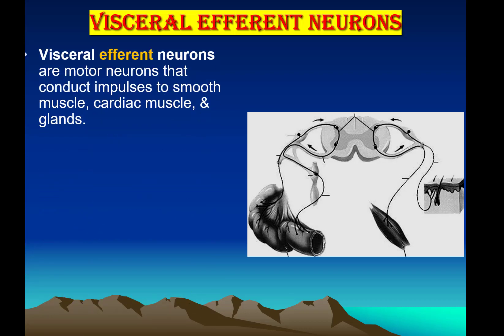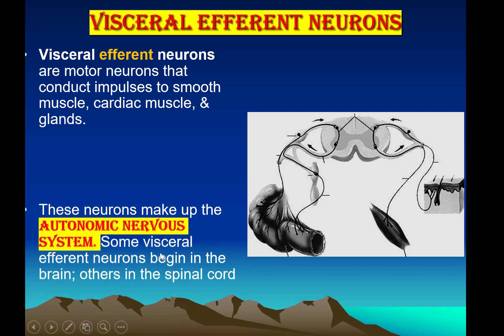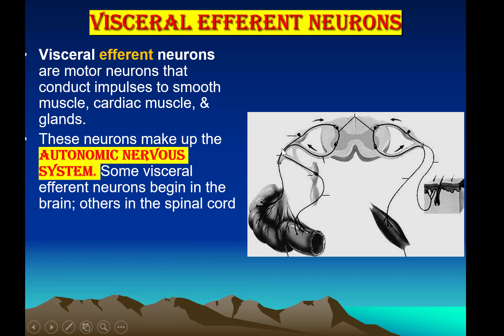Visceral efferent neurons are motor neurons that conduct impulses to smooth muscle, cardiac muscle, and glands. These efferent neurons make up the Autonomic Nervous System.